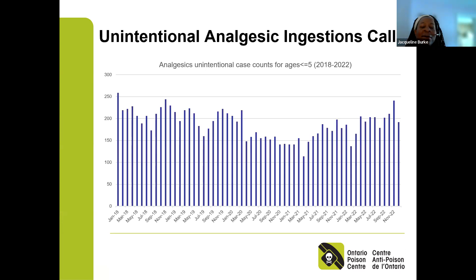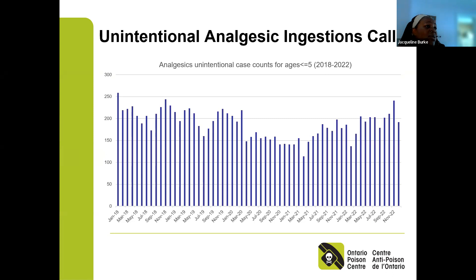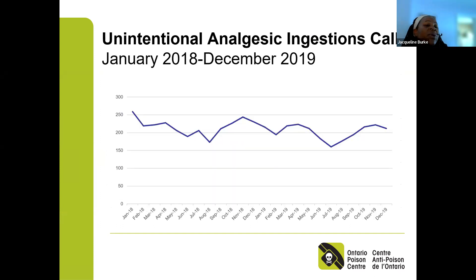Looking at data from January 2018 to December 2022, the chart shows average calls per month. At our peaks we've exceeded 250 calls per month, and even at our lowest volumes we're still over 100 calls per month where children unintentionally get into these products. I split it into pre- and post-pandemic calls to make the data easier to understand. In the pre-pandemic period — January 2018 to December 2019 — our calls follow a seasonal pattern.